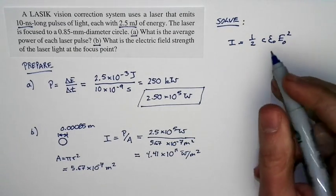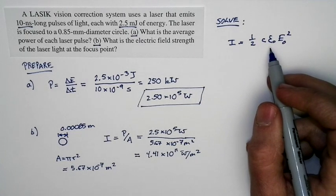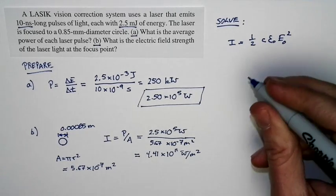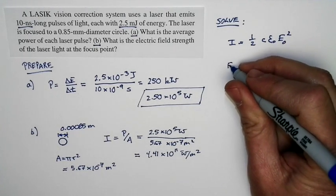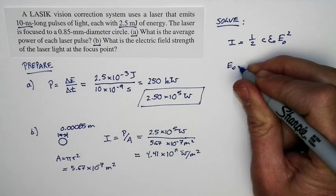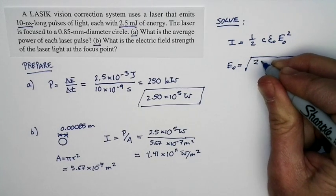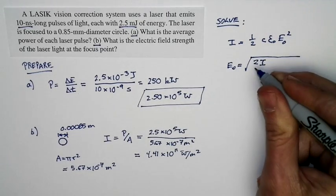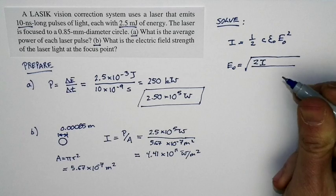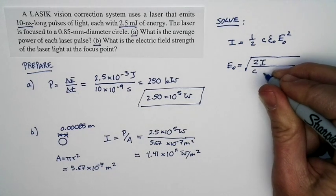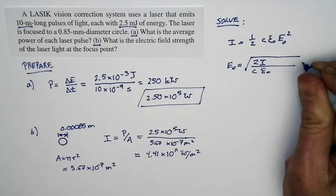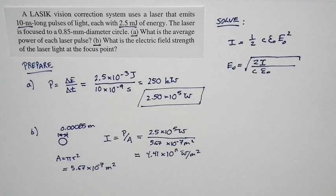So we can solve this for the strength of the electric field. We know the intensity. We know the speed of light. This epsilon zero is a fundamental constant. Let's just solve this expression for the electric field strength. The electric field strength is equal to the square root of two times the intensity divided by C times epsilon zero. Now, we know everything in this expression.